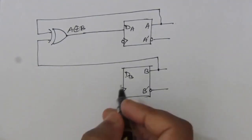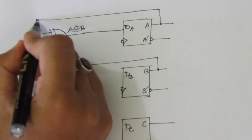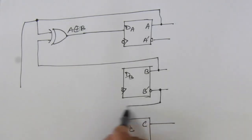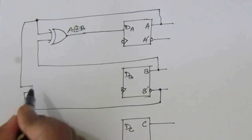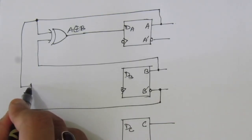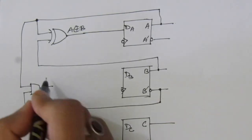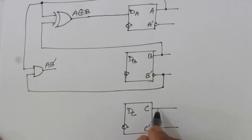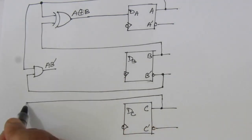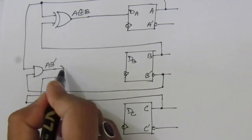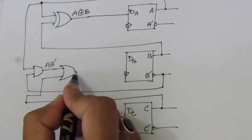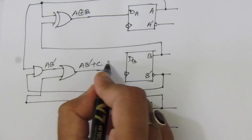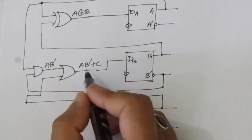For DB = A·B̄ + C: take a connection from A and from B̄ (the complement of B), and multiply them using an AND gate to get A·B̄. Then take a connection from C and add it using an OR gate. The output A·B̄ + C will be connected to the DB input.